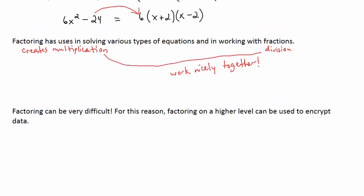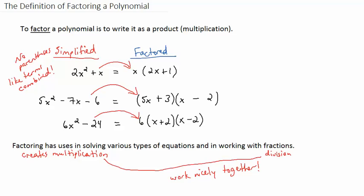What do I mean by factoring can be very difficult? Let's go back to these examples. These polynomials each have two different forms. If I wanted to start with the factored form and get the simplified form, that's pretty simple. I just distribute my x.